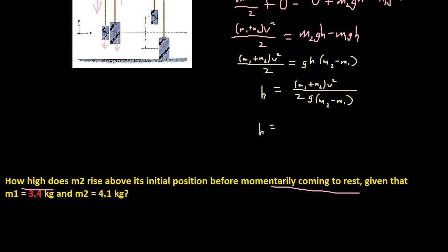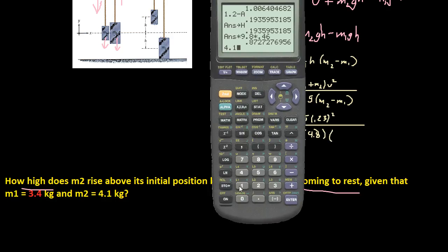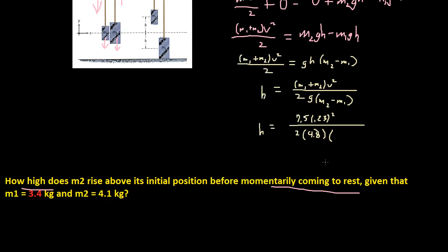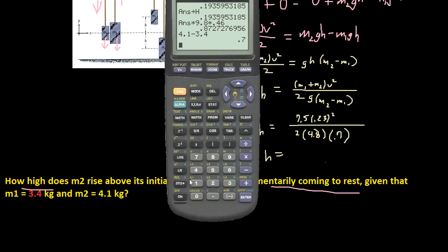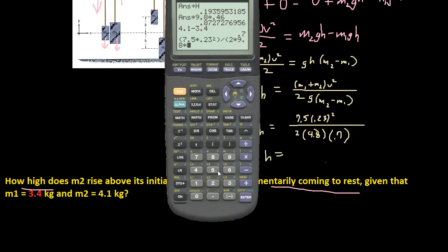So that's 7.5, V squared, V is 0.23, so 0.23 squared, all over 2 times gravity, and gravity is 9.8, times M2 minus M1. So M2 is 4.1, M1 is 3.4, so 4.1 minus 3.4 is 0.7. I'm just going to double check to check my mental math. I'm going to check with my calculator to double check my mental math, and I'm right. So it's 0.7. So H turns out to be, let's use our calculator to figure this out, so the numerator divided by the denominator.